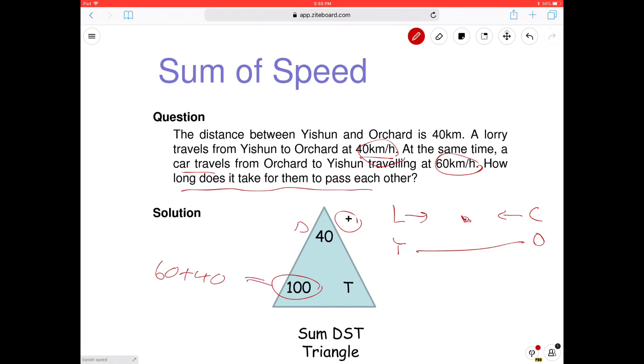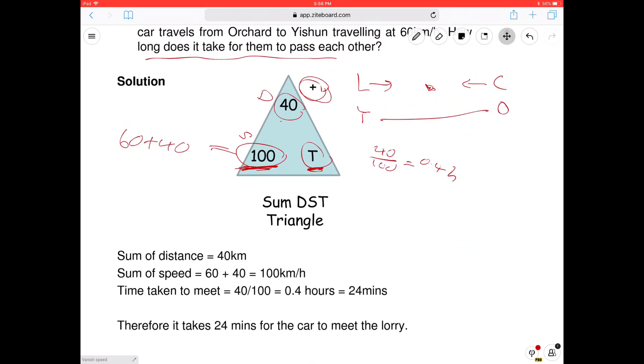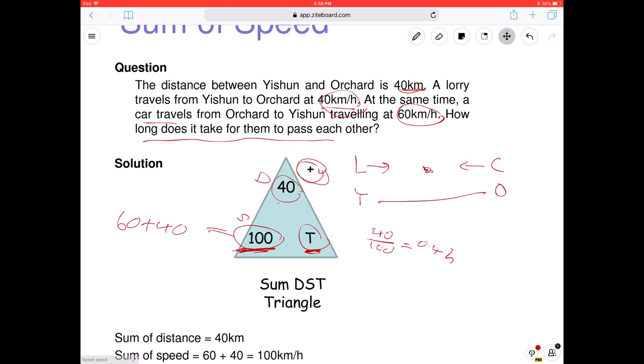Remember, this is still a DST. This is D. This is S. This is T. Okay? But it's a DST plus triangle. Alright. So the sum of their speed, which is 100. Right? Because now we want to find the time that they will meet. Right? We have to put the distance. The distance is 40. Because the distance is still 40 between Yishun and Orchard. Now this makes more sense. Okay? Right? So D is 40. Right? So how to find the time? This divided by this. This. So we take 40 divided by 100 equals to 0.4 hours. Now what is 0.4 hours equal to? 24 minutes. Yeah. So it's 24 minutes. So it takes them 24 minutes to meet. Meet each other. Okay.